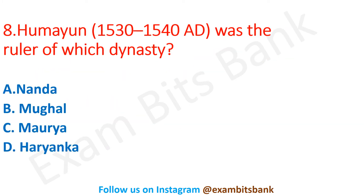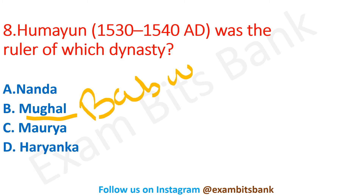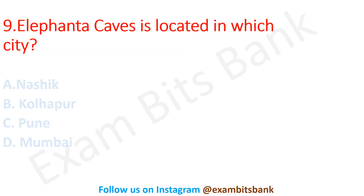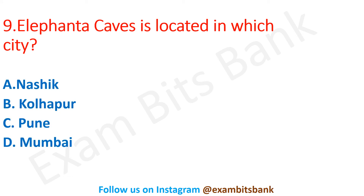Next question: Humayun was the ruler of which dynasty? Options are Nanda, Mughal, Maurya, or Haryanka. The correct answer is option B — Mughal. Humayun was the ruler of the Mughal dynasty and he was the son of Babur, the founder of the Mughal dynasty.